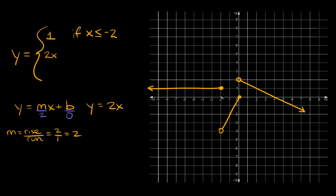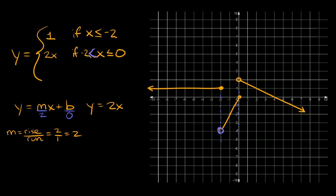This equation y is equal to two x is valid from negative two all the way to zero. So it's valid when x is greater than negative two and less than or equal to zero. Here I used a less than symbol because we have an open circle, and less than or equal to because we have a filled-in circle at zero.